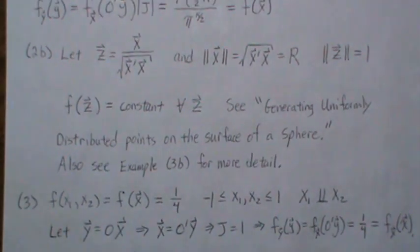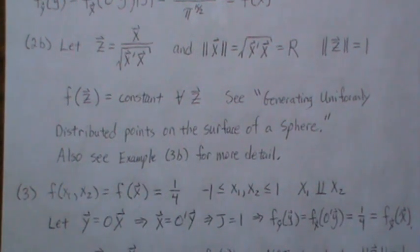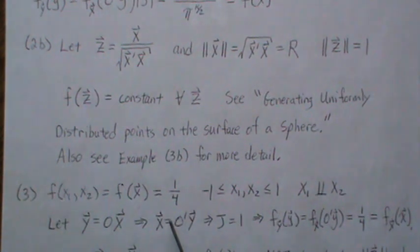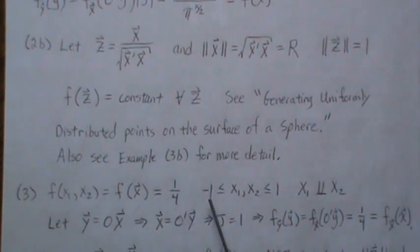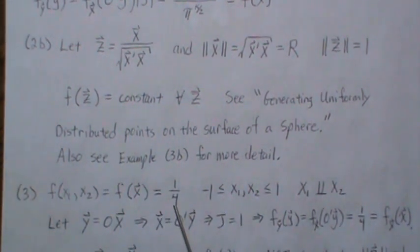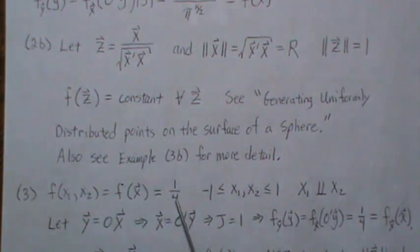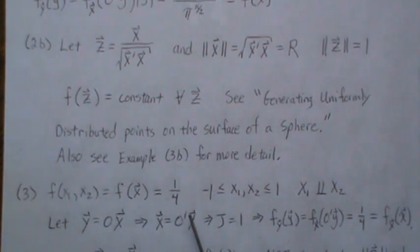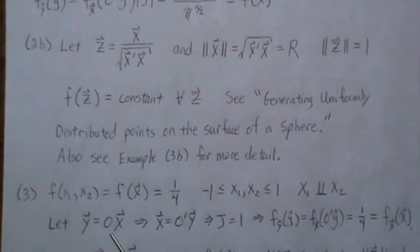So in number 3, example 3, we're going to look at a uniform distribution over a square. The square is from minus 1 to 1 in each direction. x1 and x2 are independent, and so this area is 4, so the density is 1 fourth so it integrates to 1. Now let's look at a rotation of our x coordinates. It's this. Back solve for x, Jacobian is 1.